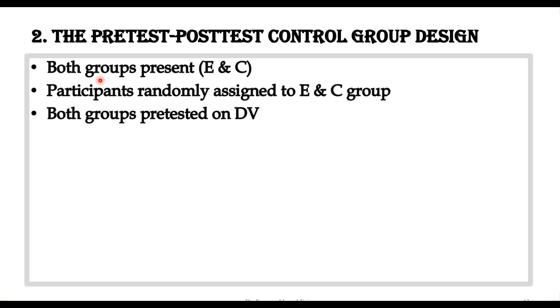The second strong experimental design is called the pre-test post-test control group design, which is an improvement on the first one because of the presence of the pre-test. Both groups are present and participants are randomly assigned to each group, because that is the strongest or true experimental design. In every true experimental design we go for random assignment. Both groups are pre-tested on the dependent variable, making it better than the previous post-test only control group design.